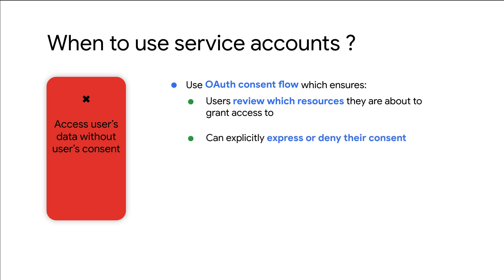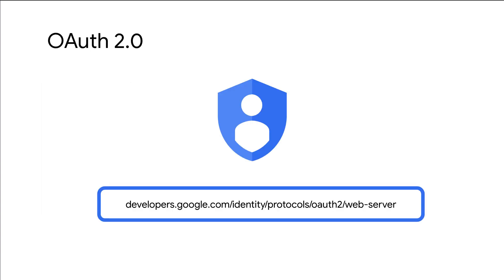This ensures that end-users can review which resources they're about to grant the application access to and can explicitly express or deny their consent. Users can revoke their consent at any time. For more information on the OAuth consent flow, check out this documentation.